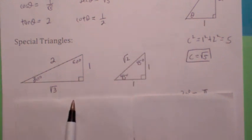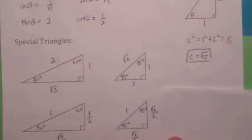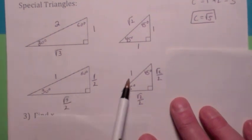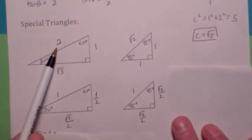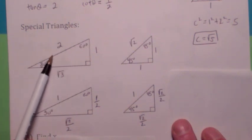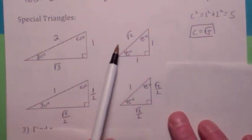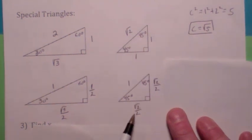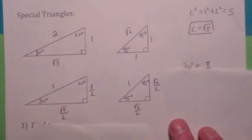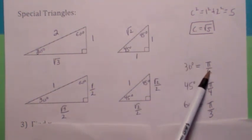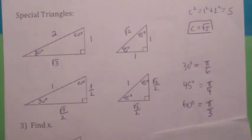I actually like to use these triangles with the hypotenuse equal to 1 on each of them. You do that by dividing all the sides by 2 for the 30-60-90, and by dividing all the sides by radical 2 and rationalizing for the 45-45-90. You should also know that 30 degrees is pi over 6, 45 is pi over 4, and 60 is pi over 3.